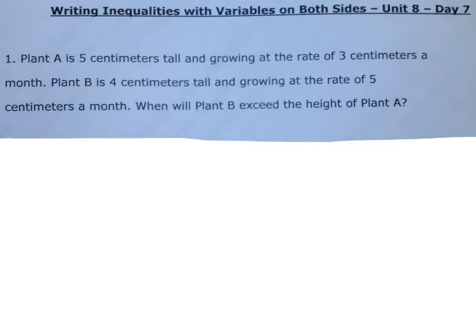Let's read it. Plant A is five centimeters tall and growing at a rate of three centimeters a month, or per month each month. Plant B is four centimeters tall and growing at a rate of five centimeters a month. When will plant B exceed the height of plant A?